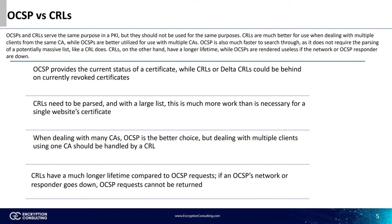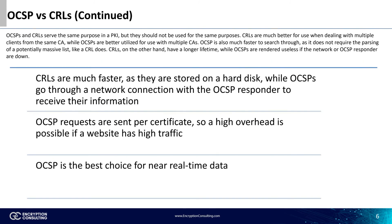CRLs also have a much longer lifetime compared to OCSPs. If an OCSP's network or responder goes down, OCSP requests cannot be returned. A CRL is kept on a hard disk, meaning if the network goes down, the CRL can still be read. OCSPs cannot be used if their responder or network goes down. Full parses of a CRL can take a while, but it can still be much faster than OCSP, as accessing certificate info across a network connection is often much slower than accessing data on a hard disk.